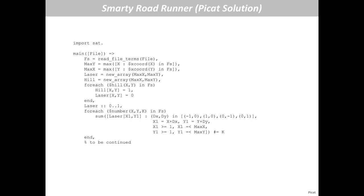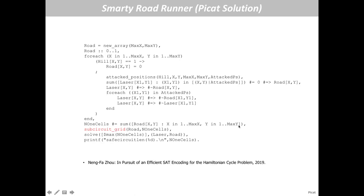Audience question: What is double colon? Double colon means the variables take this domain — it is a domain constraint. Then we create another matrix of variables for the group.